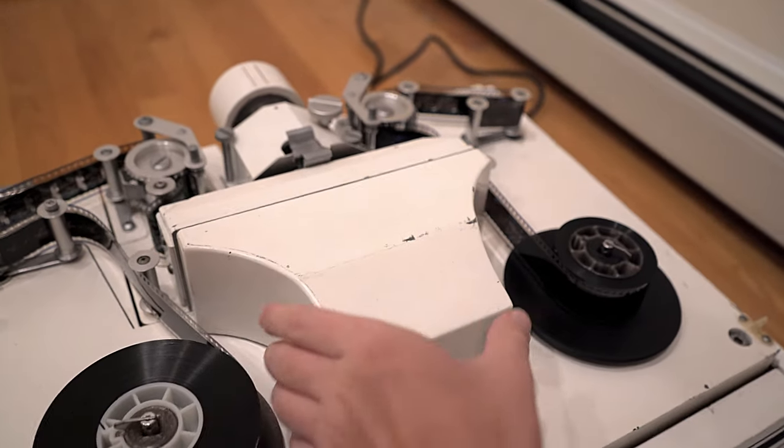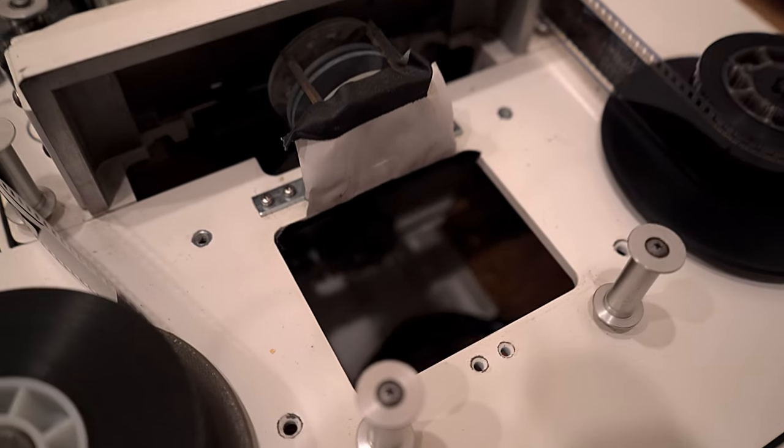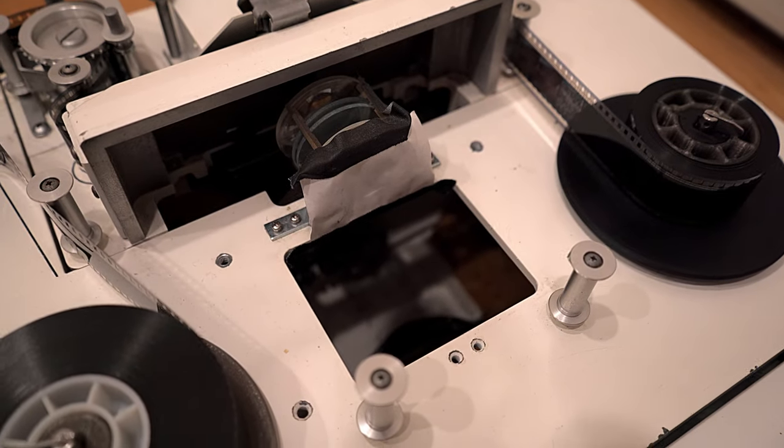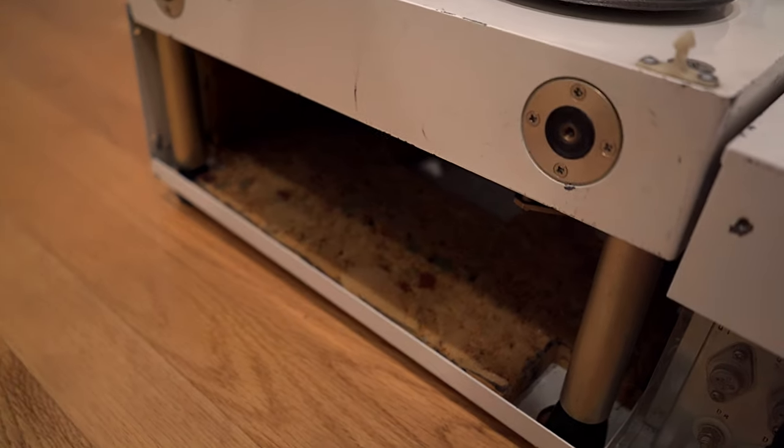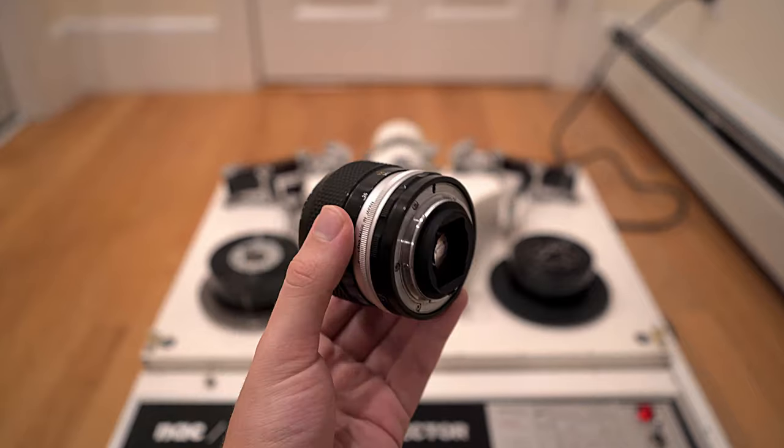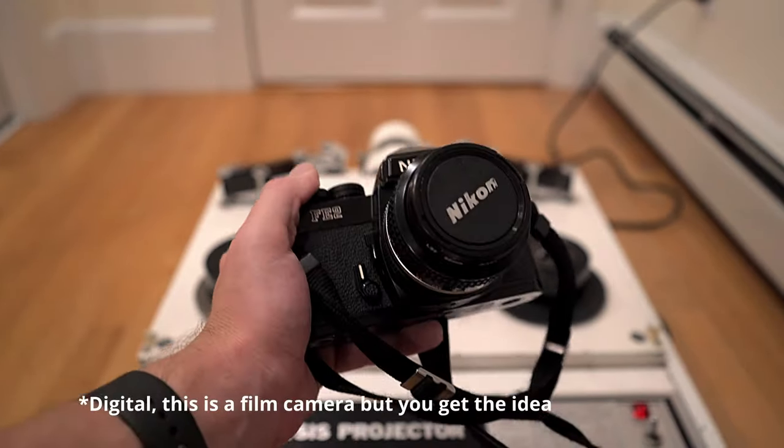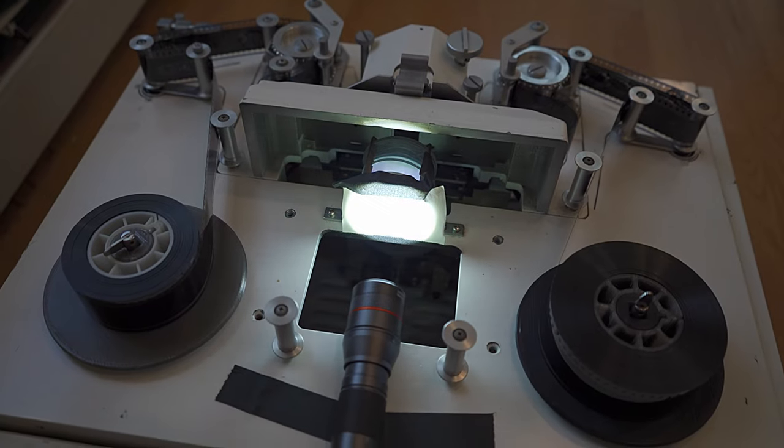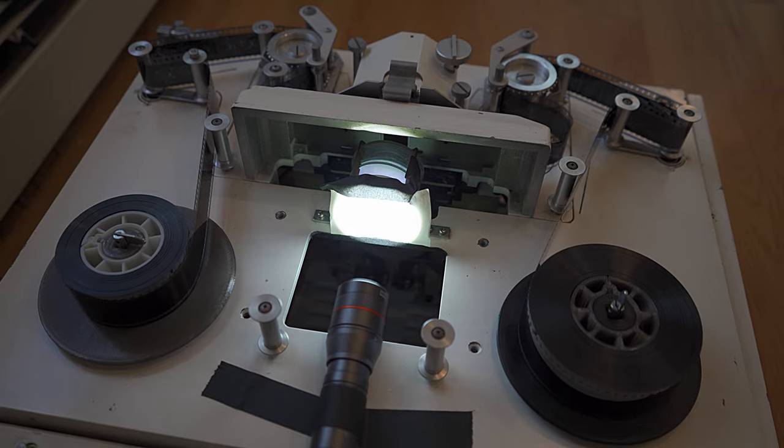When I received this projector, it was already partially disassembled by the previous owner to convert it into a film scanner. You heard me right. This projector is a perfect design to allow for taking photos of individual frames of a film reel. With the right modifications, a macro lens, a camera, and a light source, we can convert film to digital, as you can see in this rough setup.